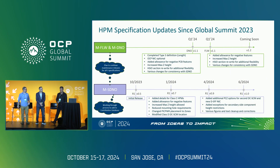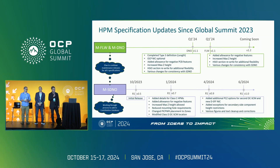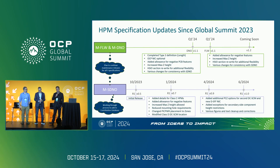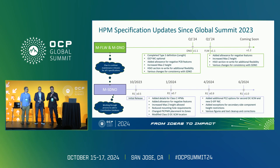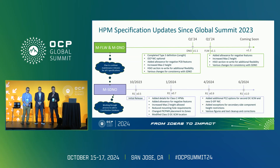We get a lot of questions on HPM specifications. In 2022, we released a set of specifications for the host processor modules called MFLW and MDNO. Those were specifically geared around 19-inch racks. The idea we had been discussing with the 21-inch rack folks is that it's basically the smaller building block — you can have it in 19 or 21. There are examples of that out on the floor.